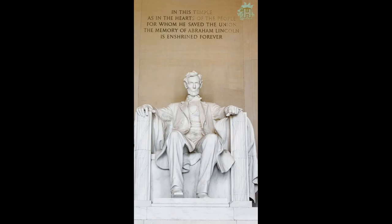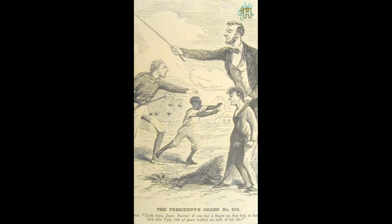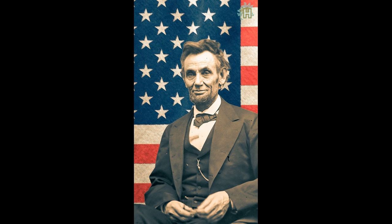On July 30, 1863, President Abraham Lincoln issued an eye-for-eye order, also known as the Order of Retaliation, during the Civil War. The order was intended to intimidate the Confederacy by threatening that Union soldiers would retaliate against Confederate prisoners for their actions against black prisoners. Union soldiers would shoot one Confederate prisoner for every black Union prisoner shot, and Confederate prisoners would be sentenced to hard labor for every black prisoner sold into slavery.